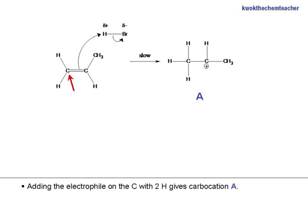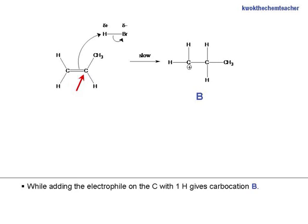Adding the electrophile on the carbon with 2 hydrogen gives carbocation A. While adding the electrophile on the carbon with 1 hydrogen gives carbocation B.